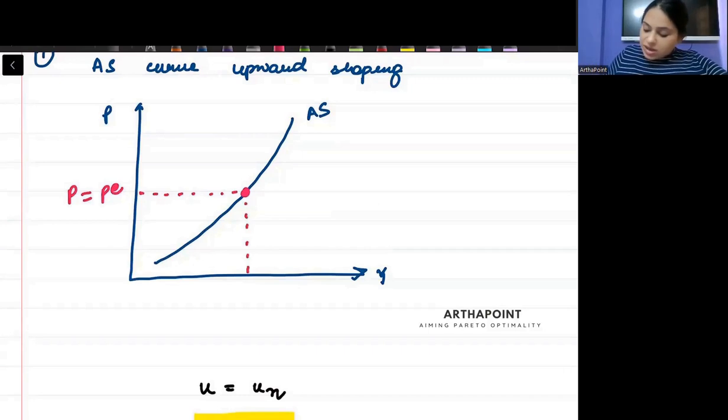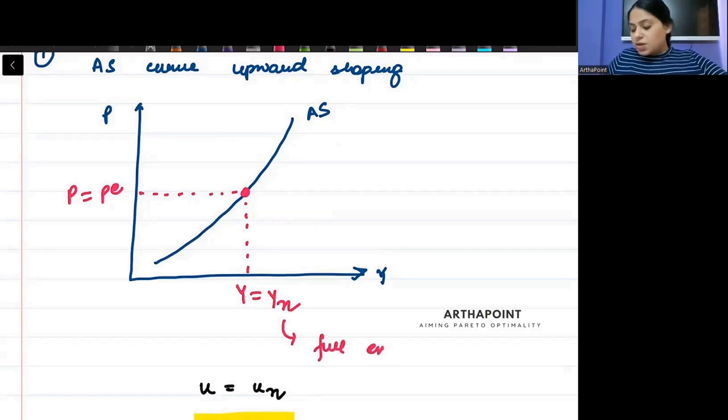But the actual price is 10 and people also expected it at 10. If that is the case, then output will be equal to natural level of output. That means full employment level. That means nobody is unemployed. Maximum production ho di hai.